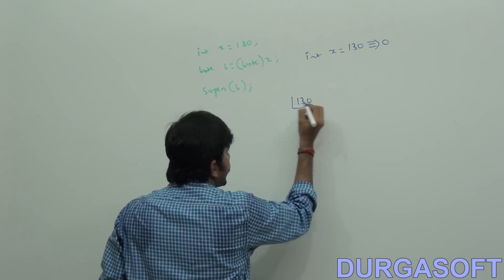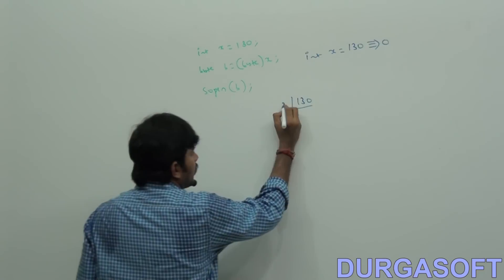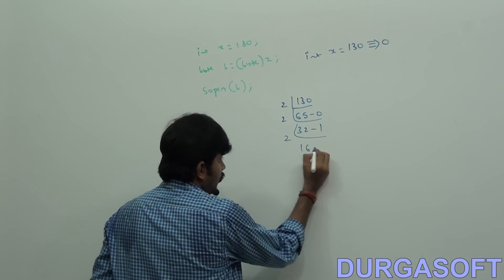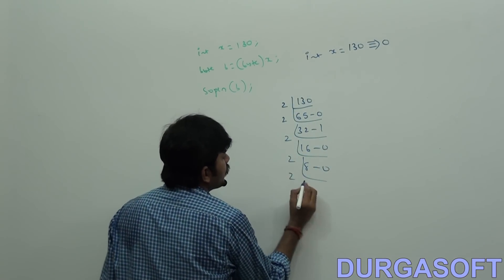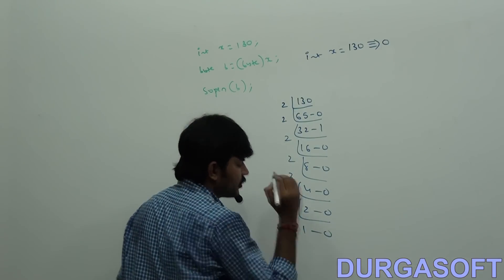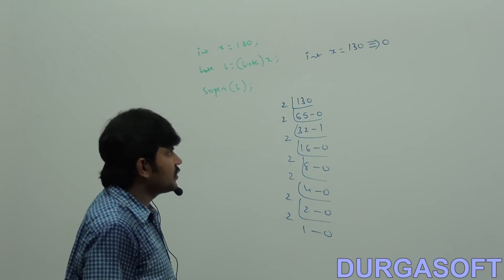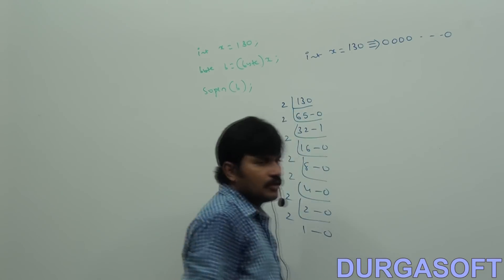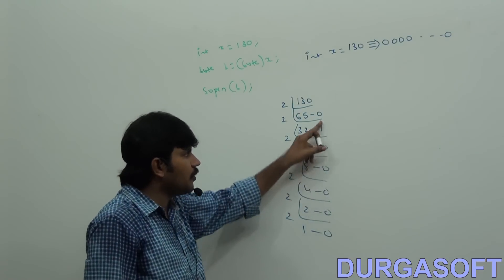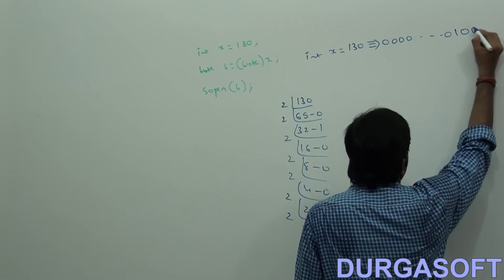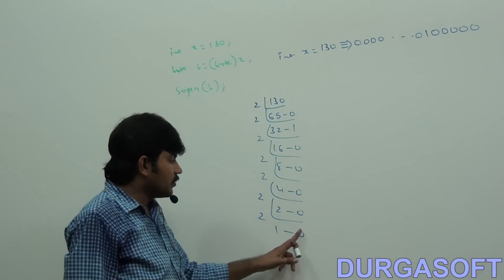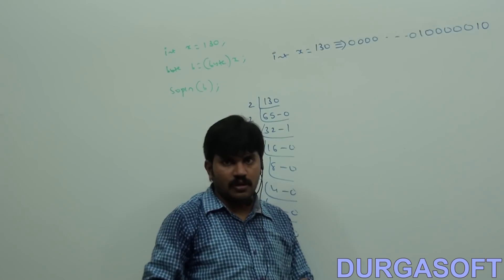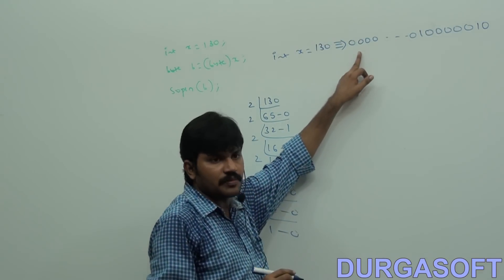So 130 in binary as a 32-bit integer: the MSB is 0 (positive), followed by zeros, and the last 8 bits representing 130 are: 1, 0, 0, 0, 0, 0, 1, 0. This gives us the binary representation of 130 stored as a 32-bit int value.